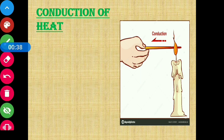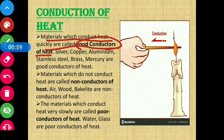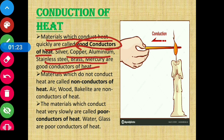From this we get the definition: materials which conduct heat quickly are called good conductors of heat. Conducting heat means allowing heat to pass through. Examples of good conductors of heat are silver, copper, aluminum, stainless steel, brass, and mercury.